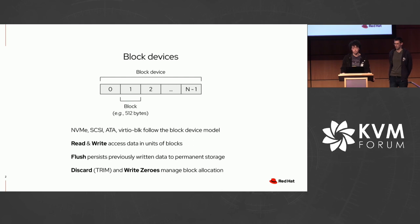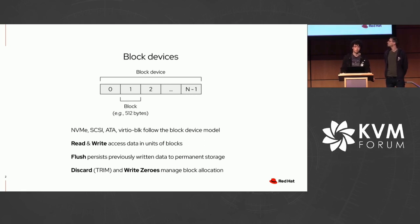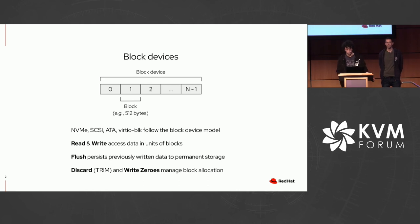The way a user would interact with block devices is by submitting requests. The most simple kinds of requests will be read and write, just to read one or more blocks, or write one or more blocks at once. Sub-block accesses aren't possible with block devices — it's not possible to read or write just part of a block, only one or more blocks at once. Other kinds of requests are flush, which ensures that data is persistently stored, and there's also discard, write zeros, perhaps a couple more in some devices.